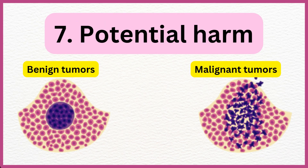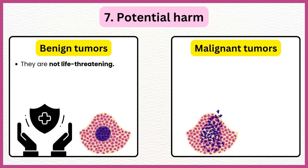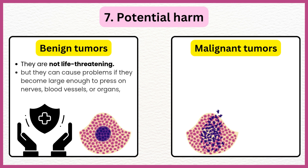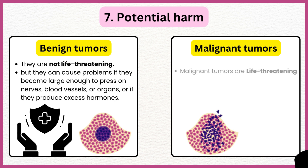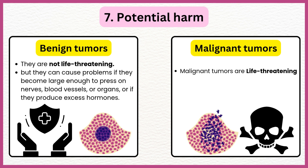Potential harm to life: Benign tumors are not life-threatening, but they can cause problems if they become large enough to press on nerves, blood vessels, or organs, or if they produce excess hormones. Malignant tumors are life-threatening tumors.